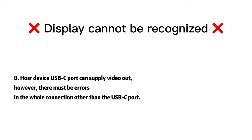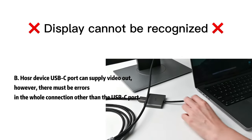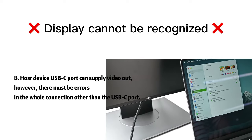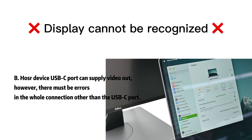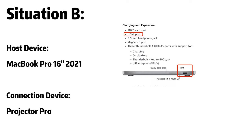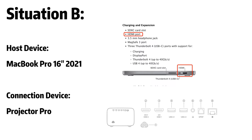Situation B: the host device USB-C port can supply video out. However, there must be errors elsewhere in the connection. For example, connecting a MacBook Pro to a projector — it is 100% sure that all four USB-C ports of the MacBook Pro 16-inch 2021 supply DP Alt mode.